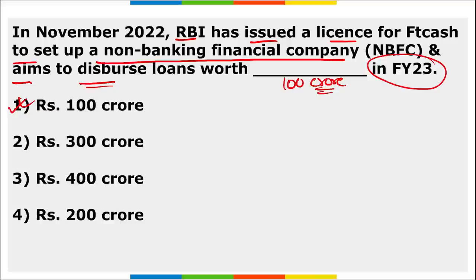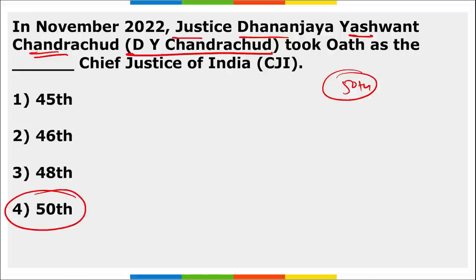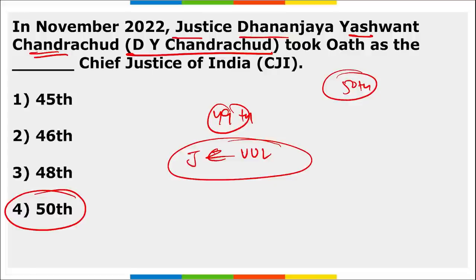Justice Dhananjay Yashwant Chandrachud — DY Chandrachud — is the 50th Chief Justice of India. A question may directly ask who became the 50th Chief Justice of India. He replaced Justice Uday Umesh Lalit, who was the 49th Chief Justice of India.